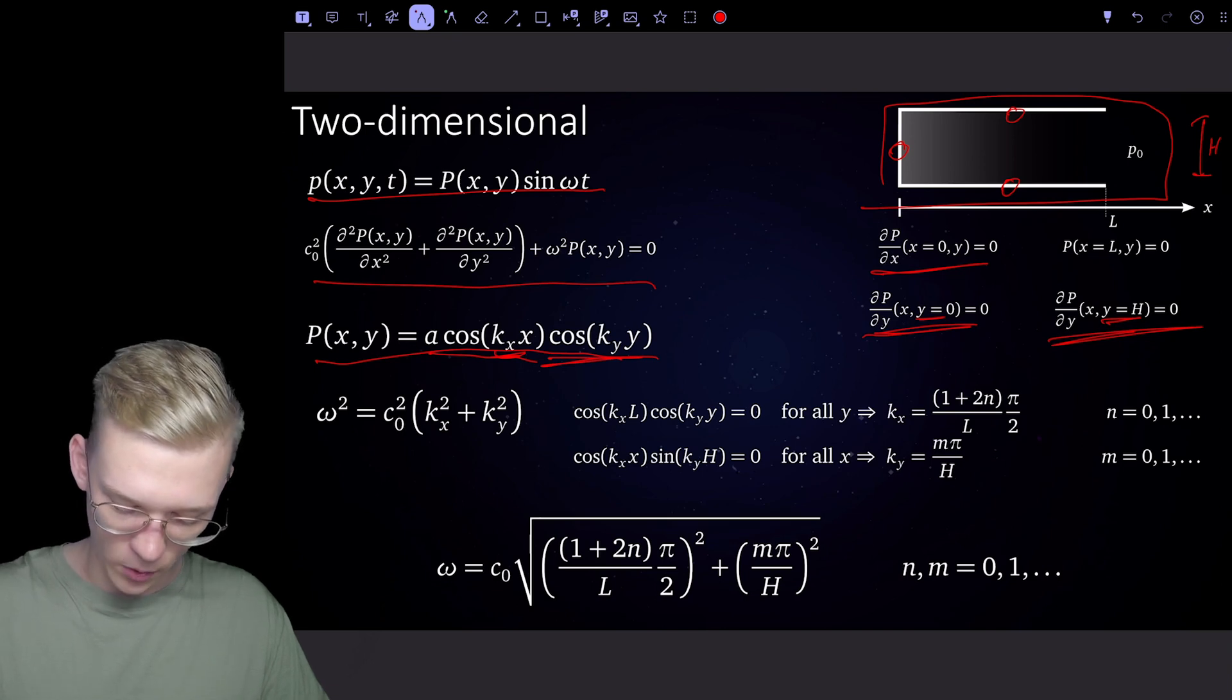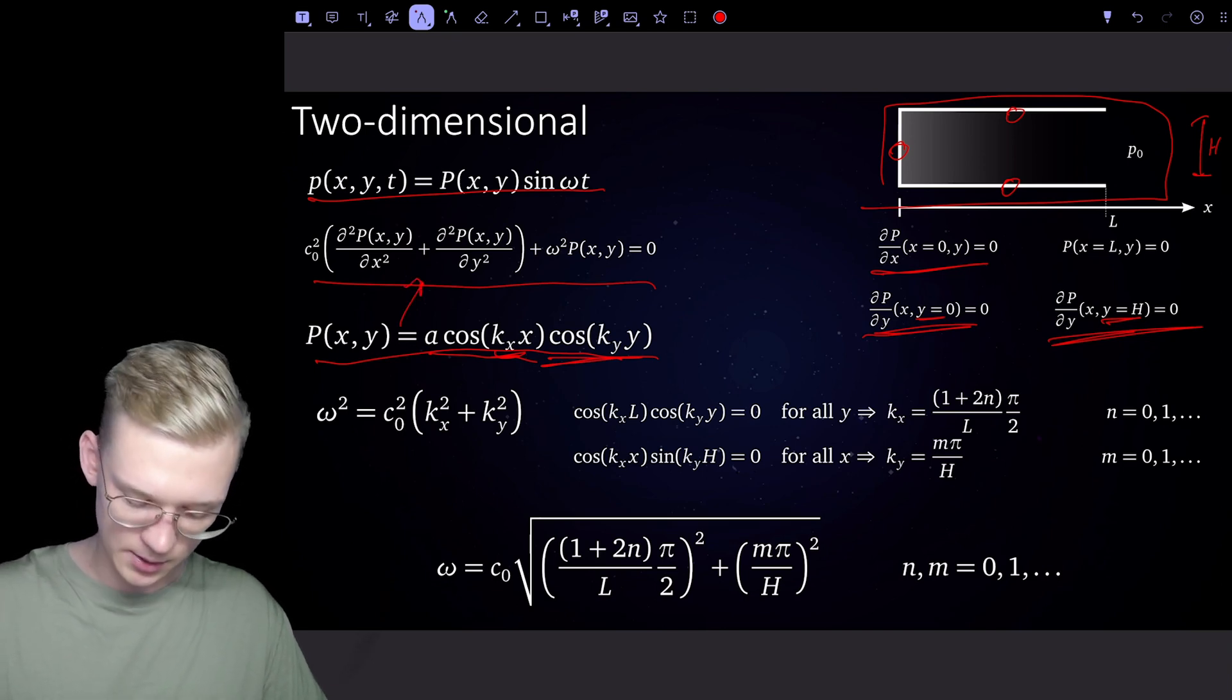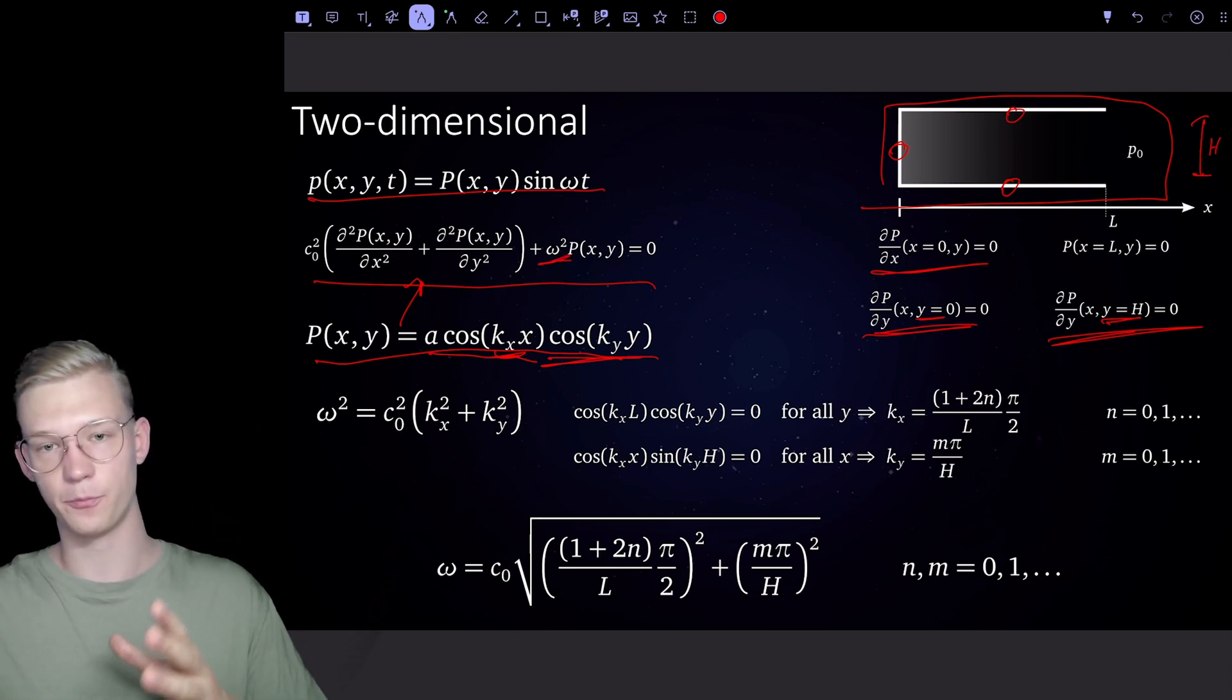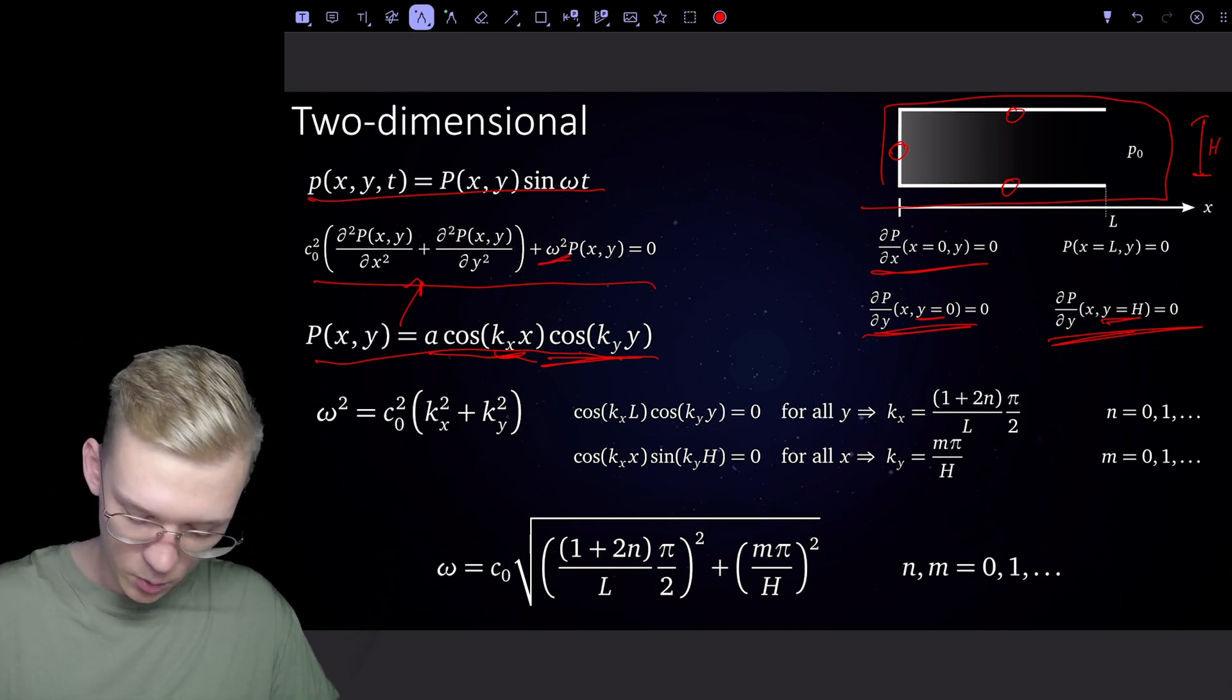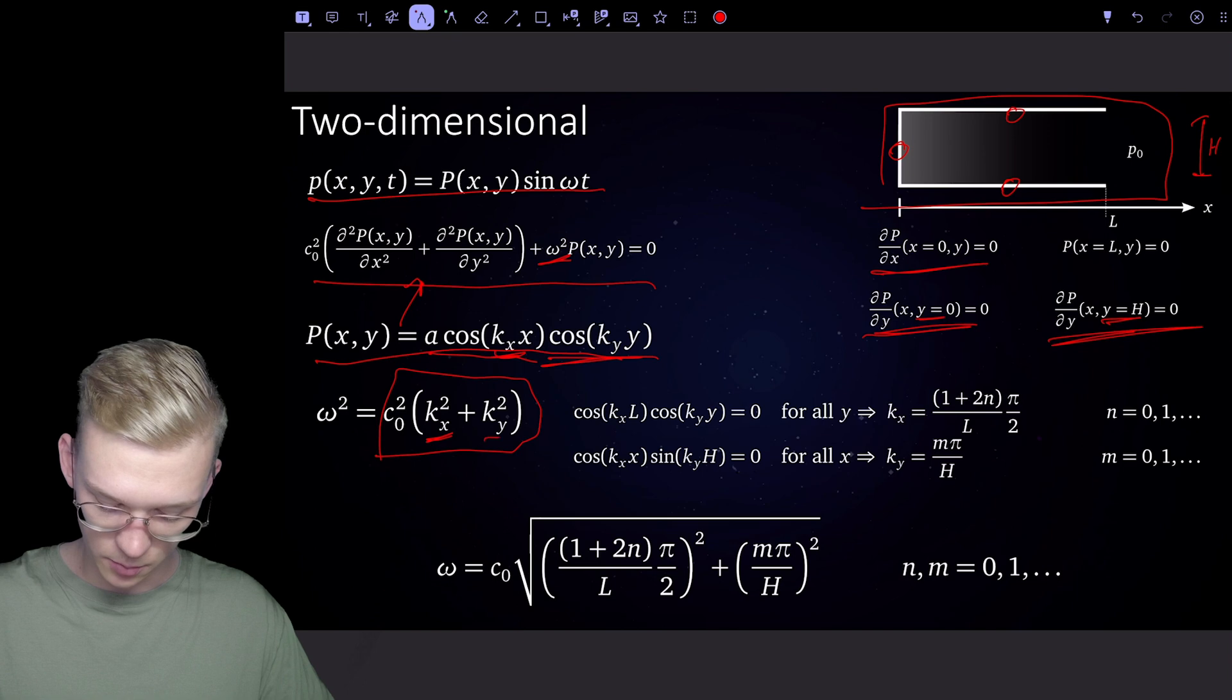Then if we derive it twice, so we insert that, derive it twice, and repackage our term, we will get that the eigenfrequency is equal to c times the square root of kx squared plus ky squared.